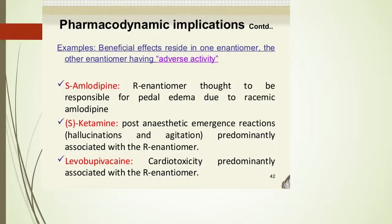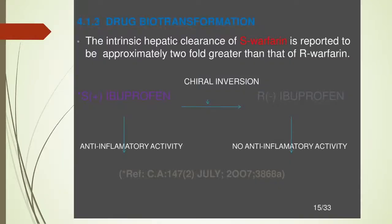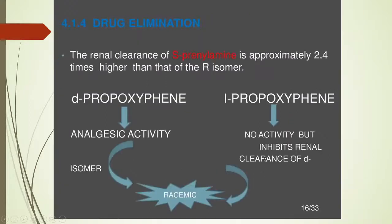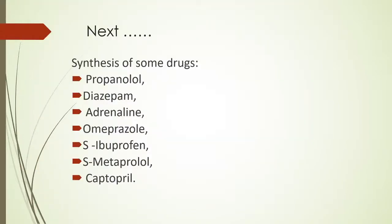This is how eutomers and distomers can be distinguished. For example, S-ibuprofen has anti-inflammatory activity whereas R-ibuprofen does not show any anti-inflammatory activity. Similarly, propoxyphene has the same kind of activities. In the next lecture, we will consider the synthesis of some chiral drugs as discussed in our slides: Propranolol, Disopyramide, Adrenaline, Omeprazole, S-ibuprofen, S-metoprolol, and Captopril.